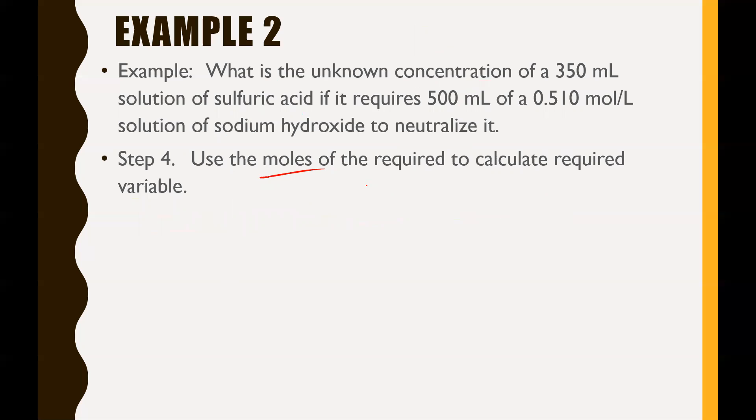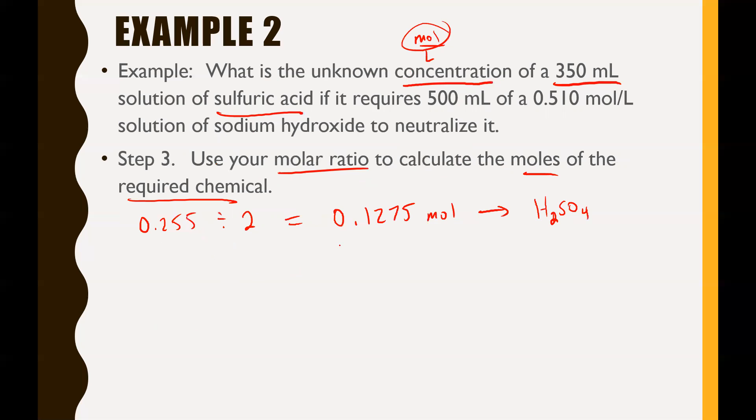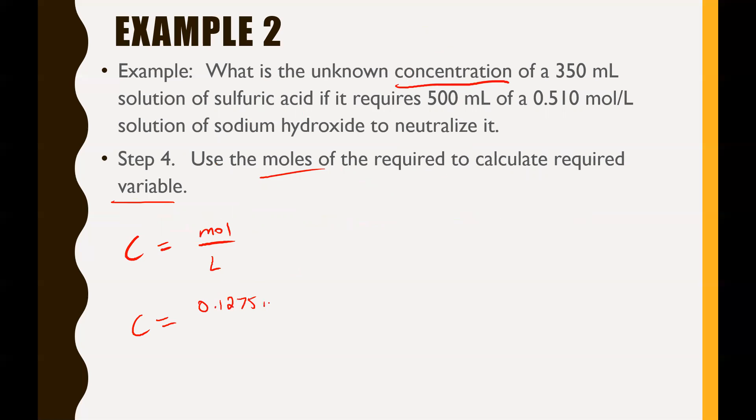Last thing is use the number of moles of the required to calculate the required variable. Our required variable is concentration. Concentration equals moles per liter. So concentration equals our number of moles, 0.1275 moles, over our number of liters, which was 350 mL, so 0.350 L. Long story short, this is going to give us, looking at sig digs - three sig digs, three sig digs, three sig digs - so it's three sig digs for our answer: 0.364 mol/L.